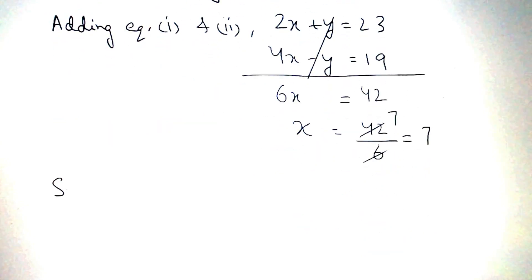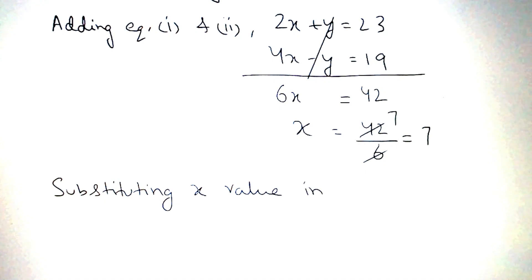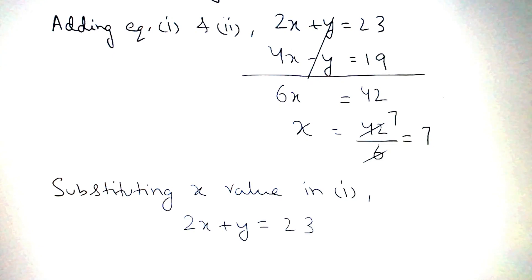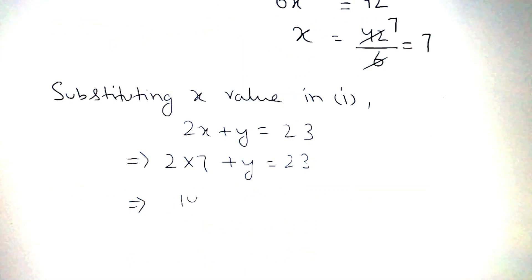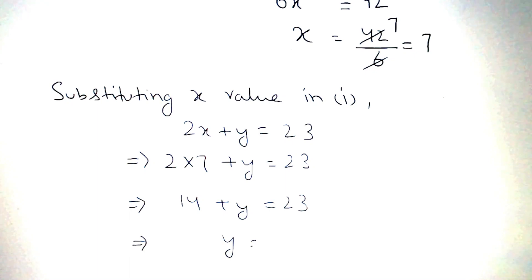Now, substituting the x value in equation 1, we get 2x plus y is equal to 23, that is 2 into 7 plus y is equal to 23. Therefore, 14 plus y is equal to 23, that is y is equal to 23 minus 14, which is equal to 9.